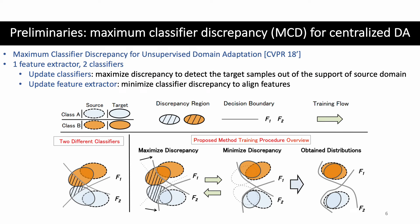Before we dive into the proposed method, we will introduce a prior work on centralized domain adaptation, which is Maximum Classifier Discrepancy. They propose to divide a machine learning model into one feature extractor and two classifiers. The classifiers are updated to maximize their discrepancy on the target data, to detect the target samples that are out of the support of the source domain. And then the feature extractor is updated to minimize the classifier discrepancy, to align the features.